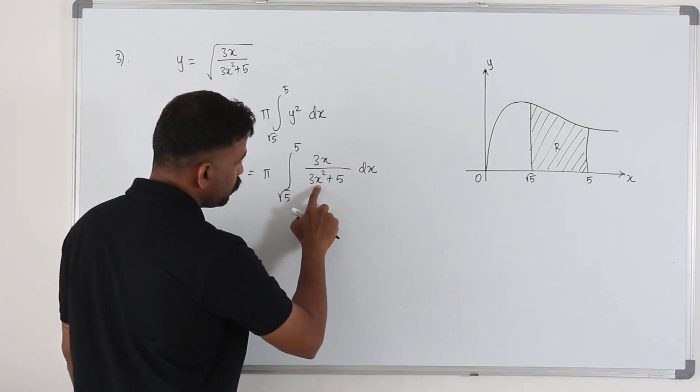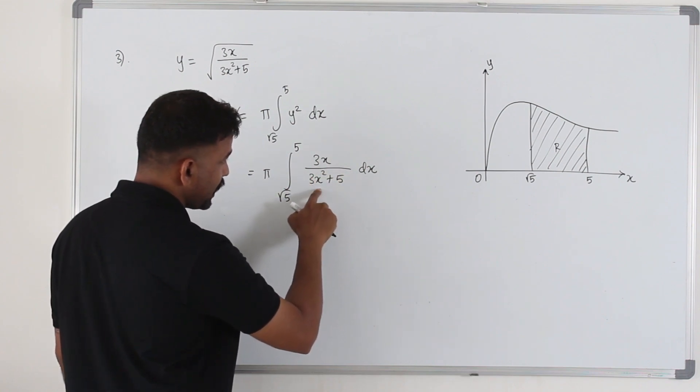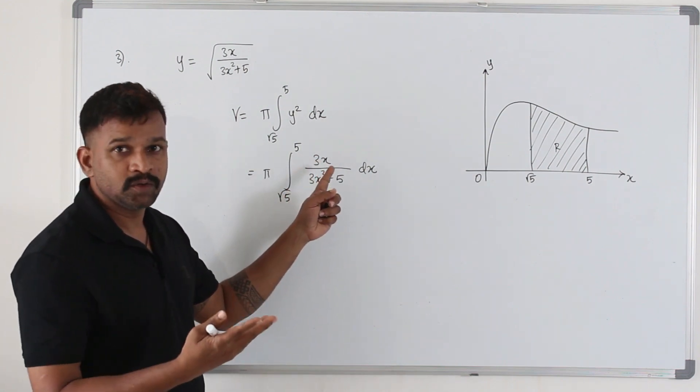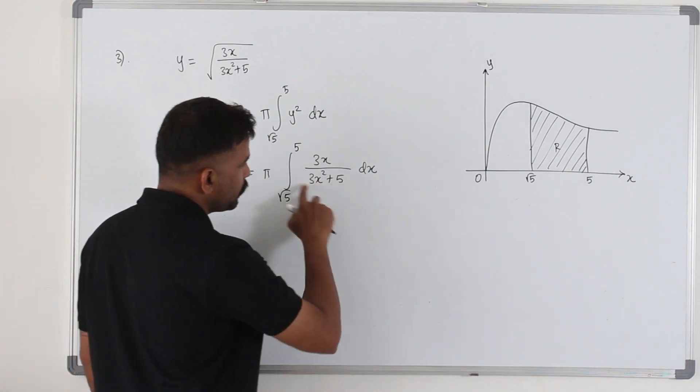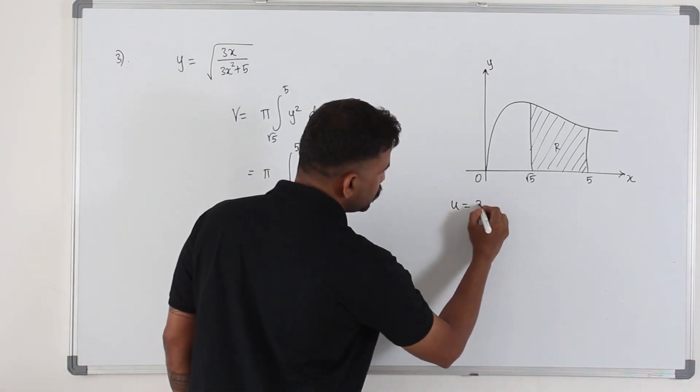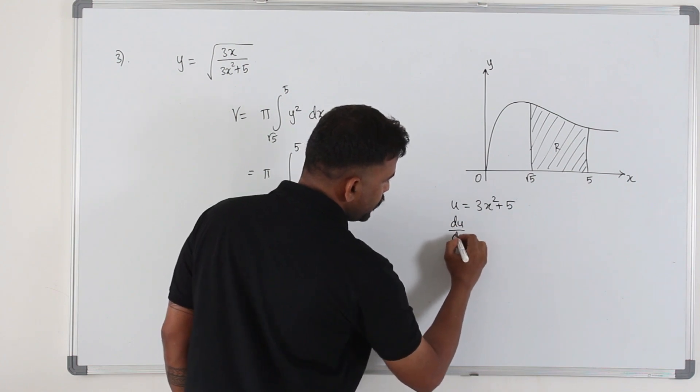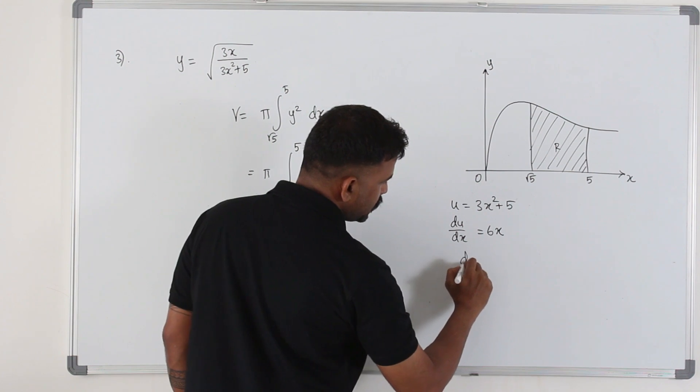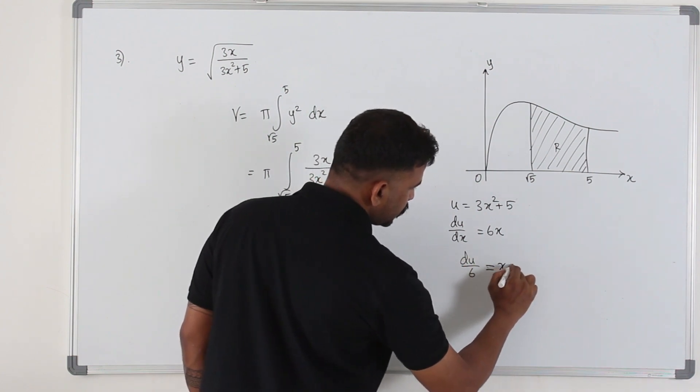Because the derivative of this is basically 6x. So you have 6x on top. You can multiply this by 2 to get a 6x. So you can apply reverse chain rule. So I'm going to take u as 3x squared plus 5. du over dx is 6x.